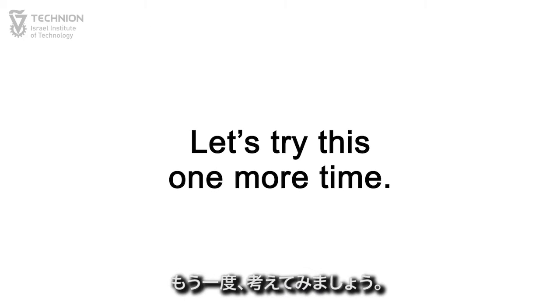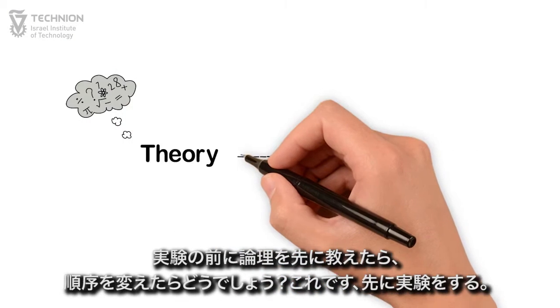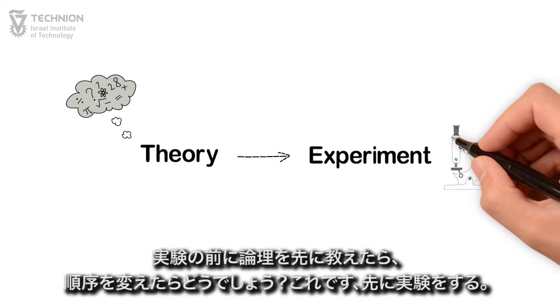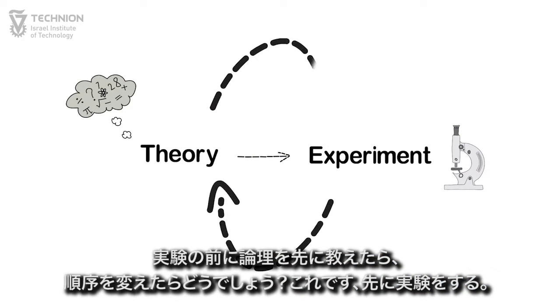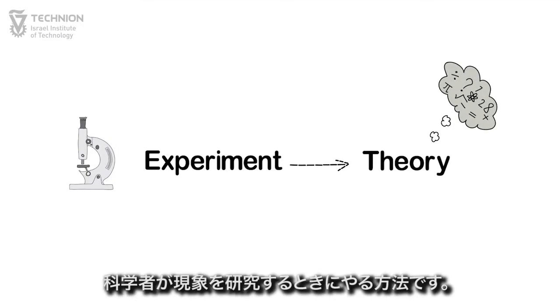Let's try this one more time. What if, instead of teaching theory before the experiment, we reversed the order? That is, start with the experiment and deduct the theory from it, just like true scientists do when they investigate a phenomenon.